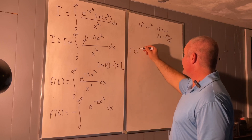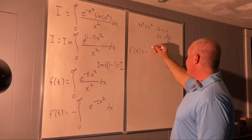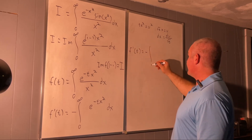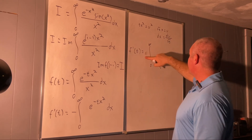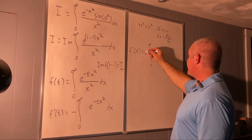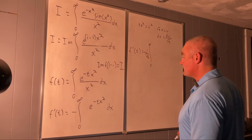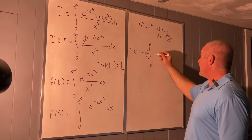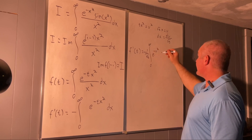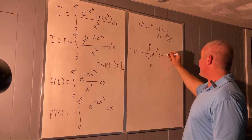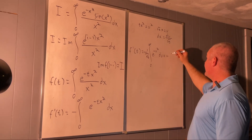Our new F prime of t is equal to negative one over the square root of t times the integral from zero to infinity of e to the negative u squared du.